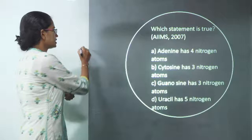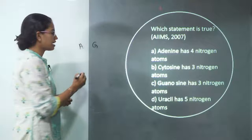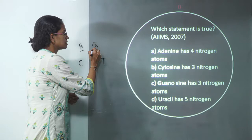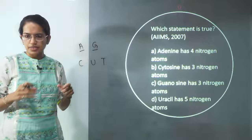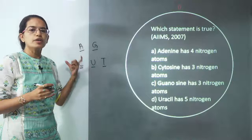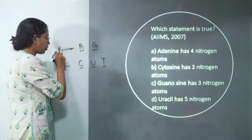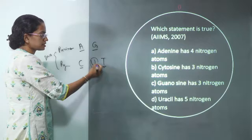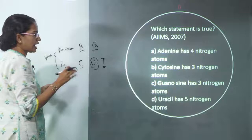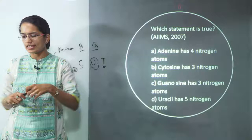You have two types of bases: purines — adenine (A) and guanine (G) — and pyrimidines. Pyrimidines include cytosine, uracil, and thymine. Adenine and guanine have four nitrogen atoms each. Cytosine, uracil, and thymine are part of the pyrimidine group, which have two nitrogen atoms. These compose DNA and RNA. In DNA, thymine is replaced by uracil in RNA.